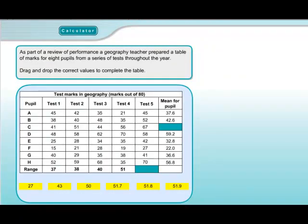Question 16. As part of a review of performance, a geography teacher prepared a table of marks for eight pupils from a series of tests throughout the year. Drag and drop the correct values to complete the table. I love the drag and drop questions because you can usually answer them very quickly and save time for the harder questions. We only have to fill in two values. The first one is looking for the range of marks in test five. The range means the difference between the highest score and the lowest score. The highest score in test five is 70, and the lowest is 27.